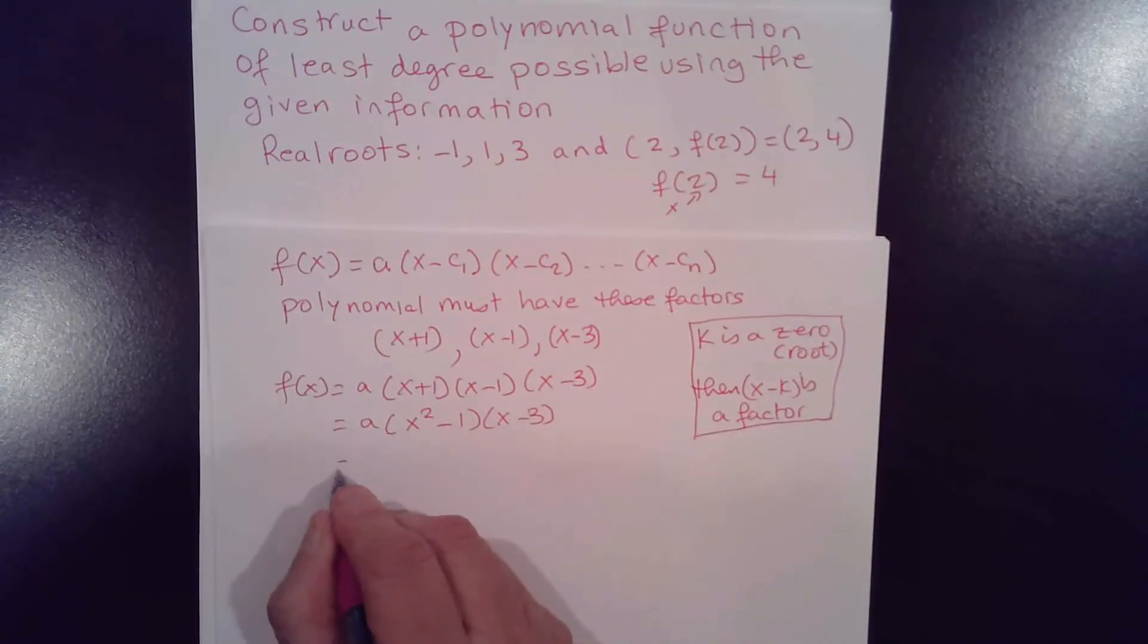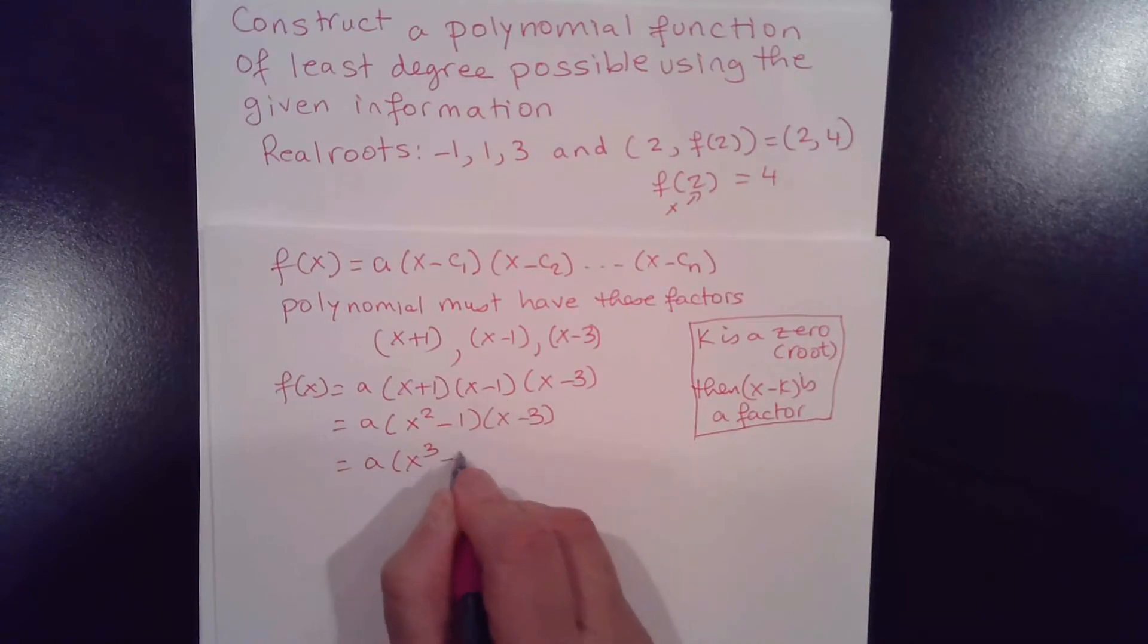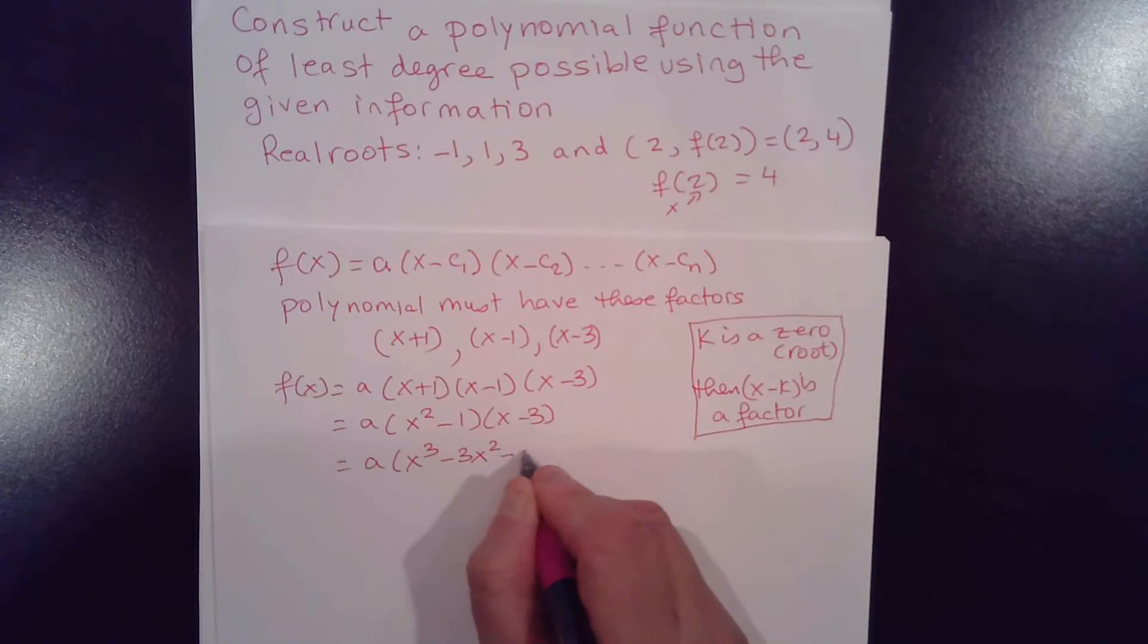And that's equal to a, distributing here using FOIL, x squared times x, that's x cubed, x squared times negative 3, that's negative 3x squared, minus 1 times x, that's minus x, minus 1 times negative 3, that's plus 3.